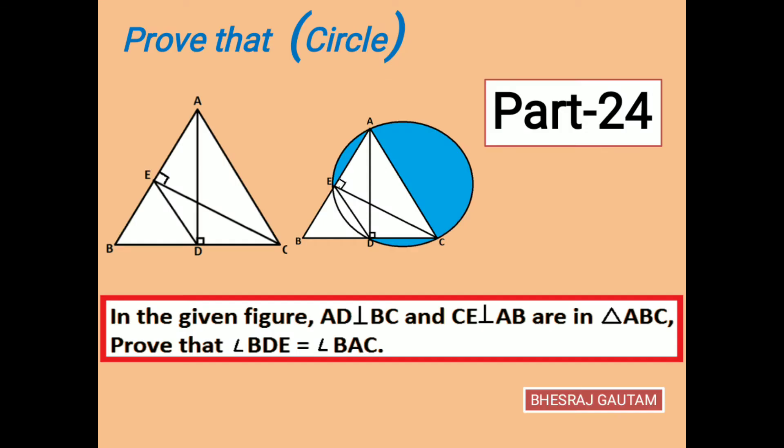the question. AD is given perpendicular to BC, and CE is given perpendicular to AB. These perpendiculars will be our major key for today's question. We always start with a clean and clear figure, then mention